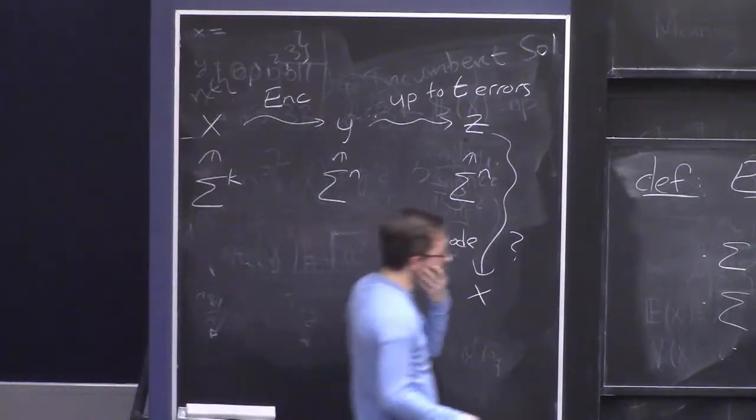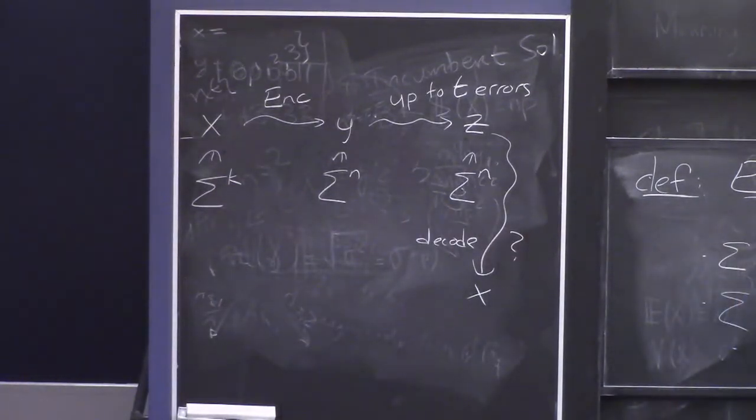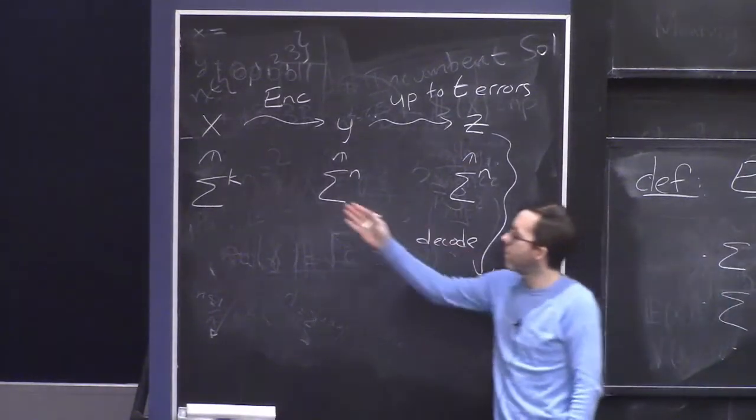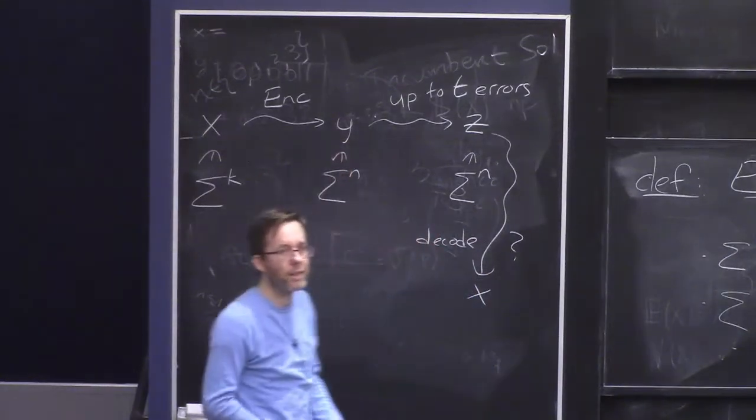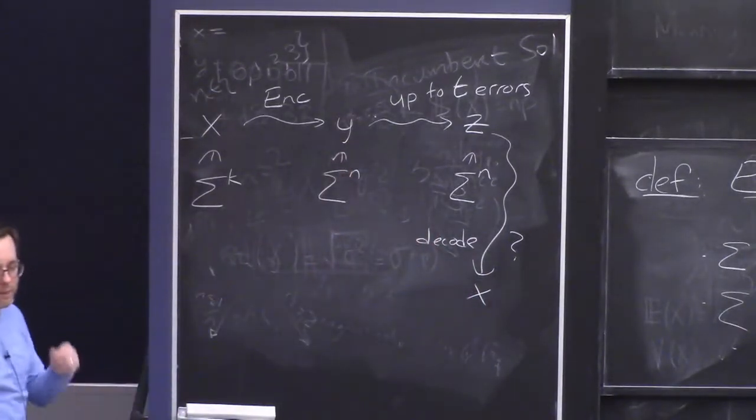And one thing I said was that you think of the encoding process as taking the original string and adding some redundancy to it. We're not actually insisting that the error correcting code be of the form, first transmit X and then transmit some additional redundant symbols. Y might just be any old string that represents X. Actually, often it will be the case that the symbols of X will be a substring of Y. In that case, it's called a systematic error correcting code, but we don't necessarily insist on that.